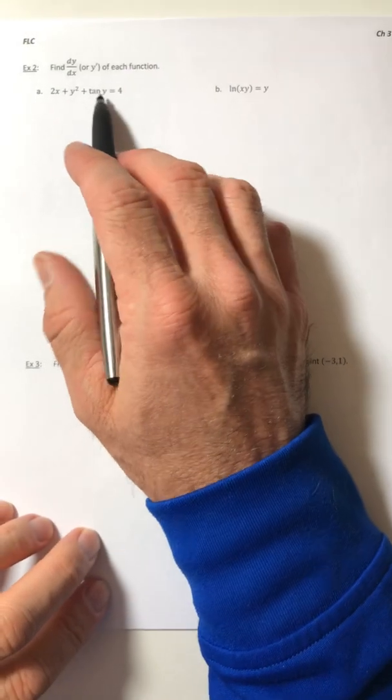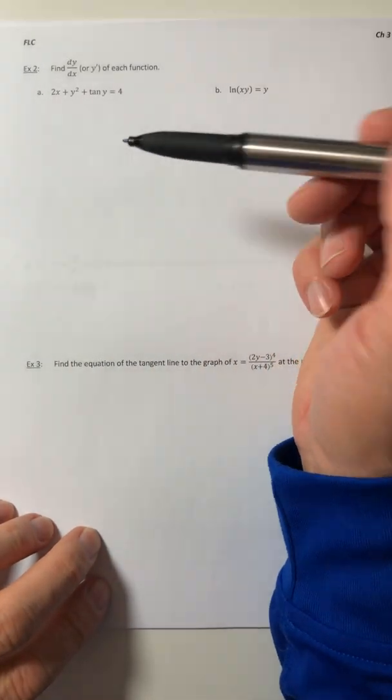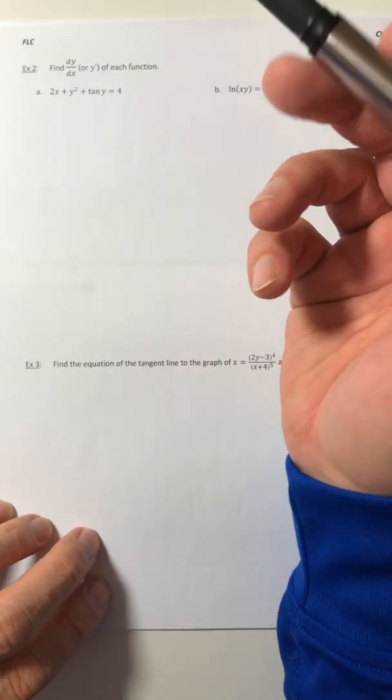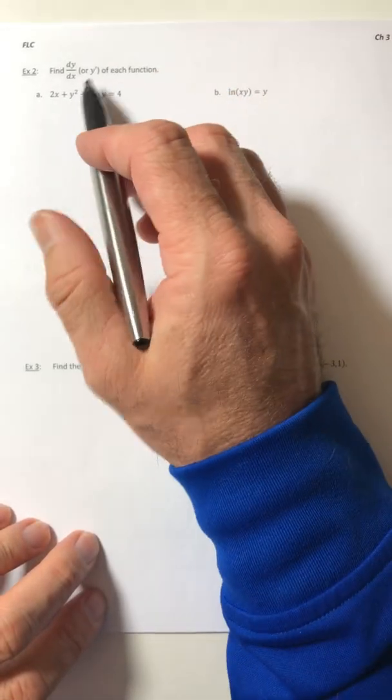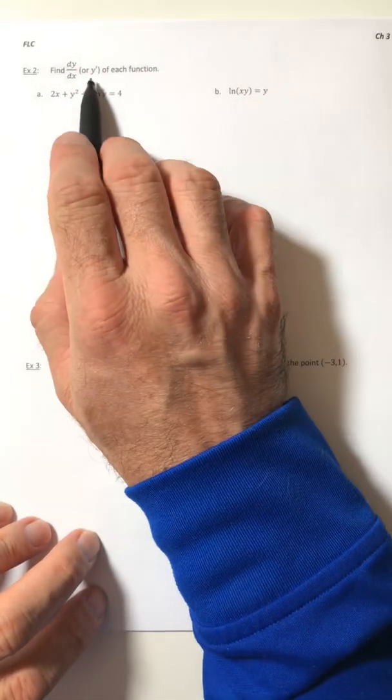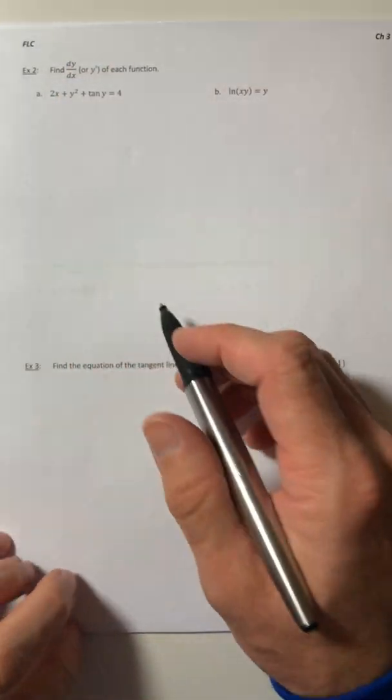Same thing, just remember every time you take the derivative of a y term, you need to multiply by that dy/dx or the y prime. And FYI, the book is always going to use dy/dx as well as myself, but if you want to use y prime instead, totally go for it.